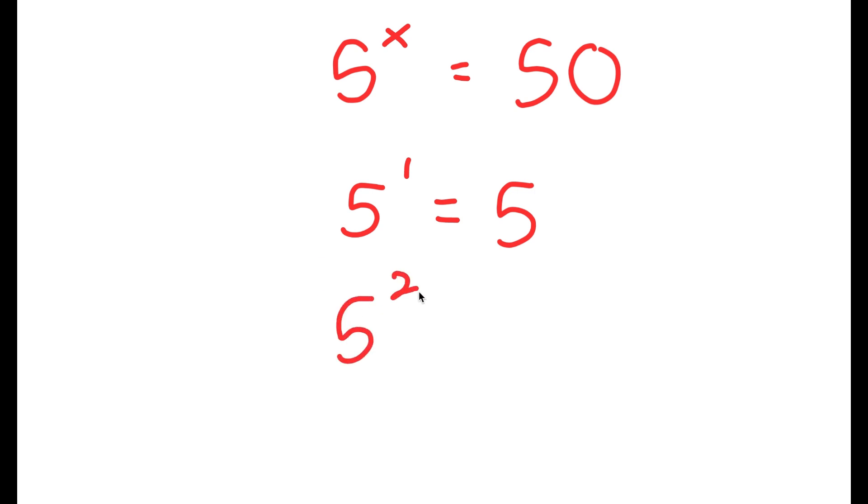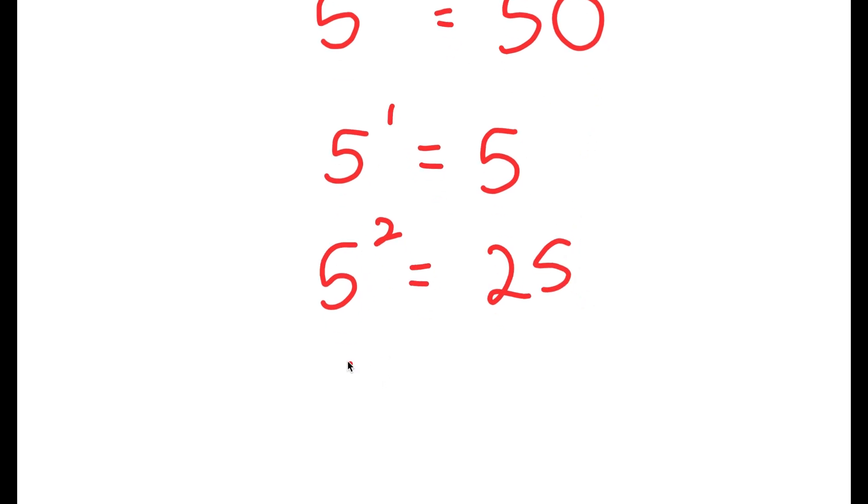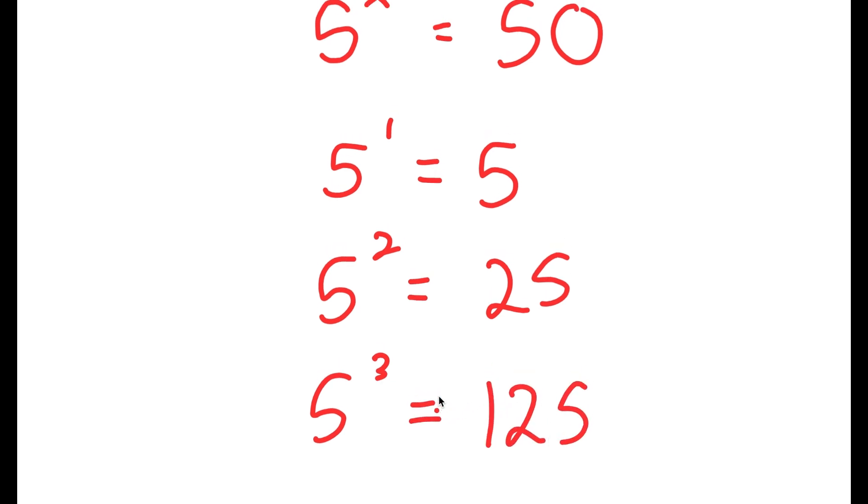Now if x equals 2, I get 5 to the power of 2, which is 25, and this again is too low. Now if x equals 3, then I have 5 to the power of 3, which is 125, and this is way too high.